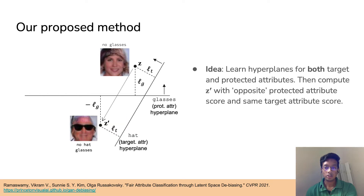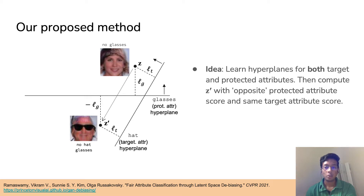Since we want to control both the hat attribute and the glasses attribute, we compute hyperplanes for both. Given these hyperplanes, we compute a hat score and a glasses score for every latent vector Z. We then compute a corresponding Z prime that has the negative of the glasses score but the same hat score, so both Z and Z prime are either wearing hats or not, and one of them is wearing glasses.